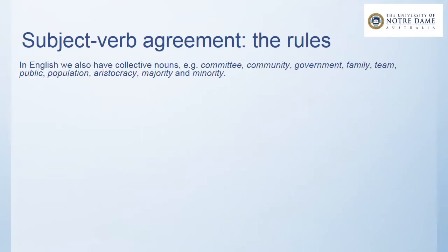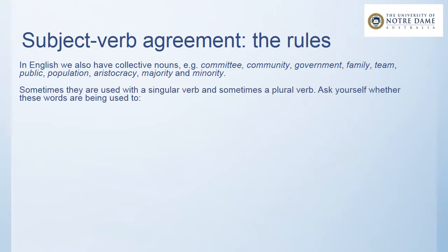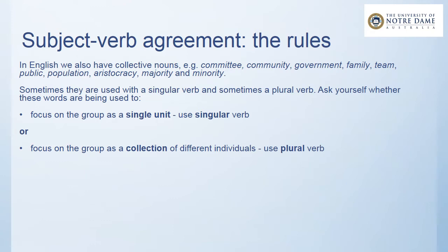In English, we also have collective nouns. These are nouns like committee, community, government, family, team, public, population, aristocracy, majority, and minority. Sometimes these nouns are used with a singular verb and sometimes a plural verb. To figure this out, ask yourself whether these words are being used to focus on the group as a single unit or as a collection of different individuals. If we are referring to the group as a single unit, we use a singular verb; if our focus is on the group as a collection of individuals, we use a plural verb.